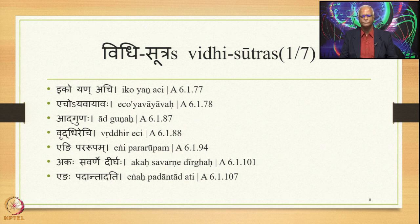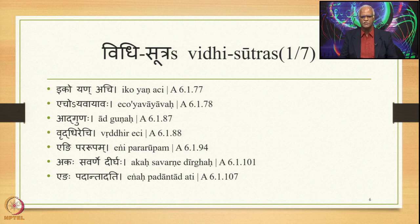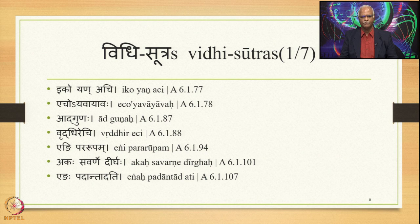Similarly, the Pararupa Sandhi stated in the subsection starting with 6.1.94, Engi Pararupam, will be studied. The other important Sandhi is Savarna Dirgha Sandhi, stated by Akas Savarne Dirgha, 6.1.101, as well as the Purvarupa Sandhi stated by Engapadanta Dati, 6.1.107. All the Sutras mentioned deal primarily with the Swara Sandhi, or Vowel Sandhi, or Acha Sandhi as it is known in Paninian terminology — Sandhi in place of a Swara.